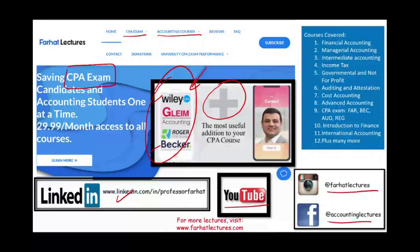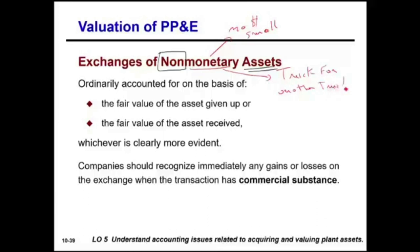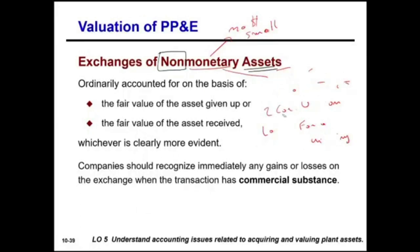So let's talk about what exchanges of non-monetary assets are. What we are exchanging are assets that are non-monetary in nature — meaning no money is involved, or only a small amount of money. Basically, we are exchanging maybe a truck for another truck, or it doesn't have to be a truck for a truck. It could be two cars for a van, or some other asset, like land for a building — one asset versus another, and those assets are non-monetary in nature.